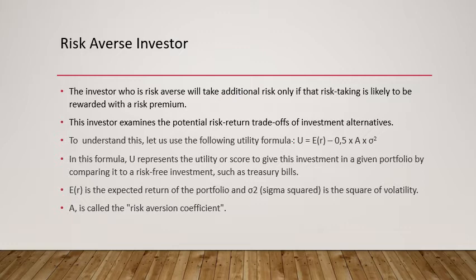To understand this, we use the utility formula: U = ER − 0.5 × A × σ², where U is the utility score given to an investment compared to a risk-free investment such as treasury bills, ER is the expected return of the portfolio, σ² is the square of volatility (variance), and A is the risk aversion coefficient.